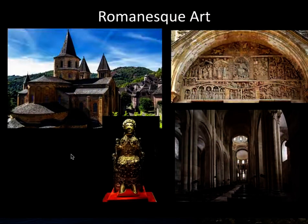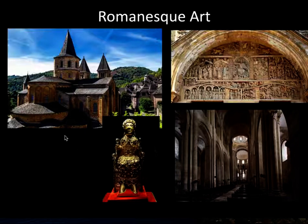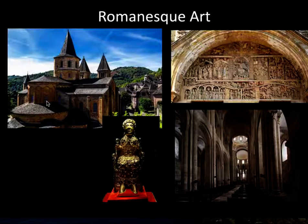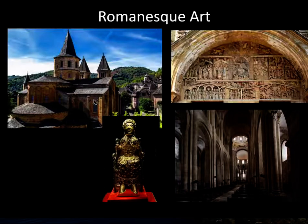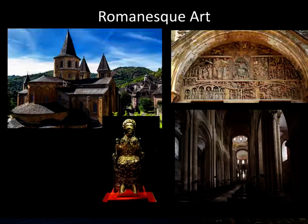The next stage is Romanesque art, which gets its name from the way the Romans built their churches and windows. With the rediscovery of Rome and its ancient buildings and artifacts, Roman building techniques came to be used throughout Europe. The main characteristic of Romanesque art is the Roman-style rounded-top windows, which are rather small because the walls could not be opened up to let in more light — there was no way of displacing the weight of the roof.